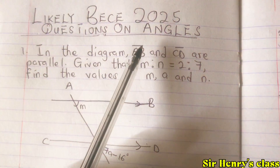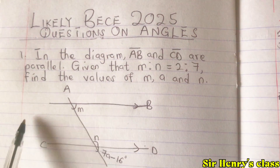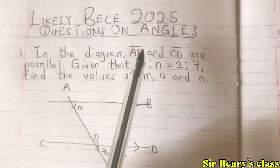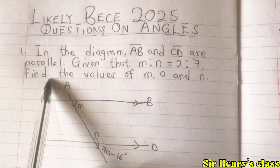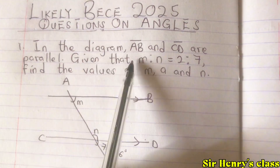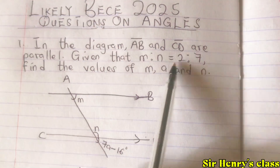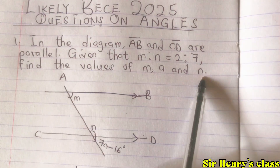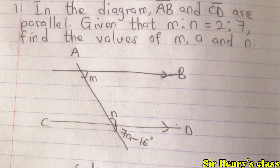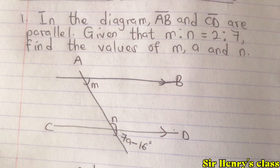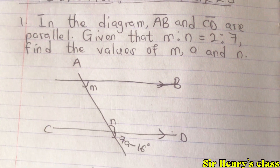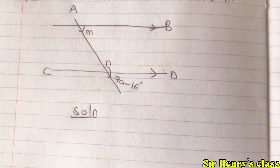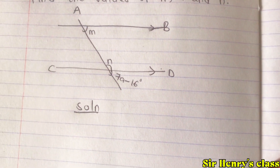In the diagram, there are lines AB and CD. Lines AB and CD are parallel. Given that m is to n equals 2 is to 7, find the values of m, a, and n. This is the diagram given to us — we need to find the values of m, a, and n. Let us quickly go through and apply the necessary conditions.